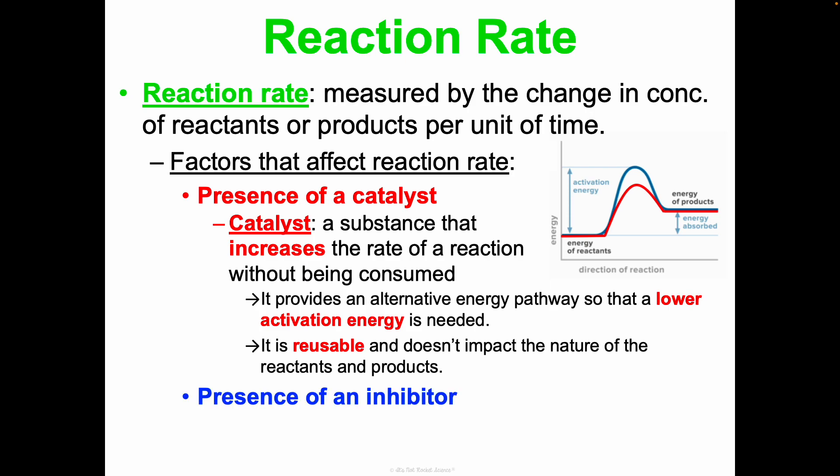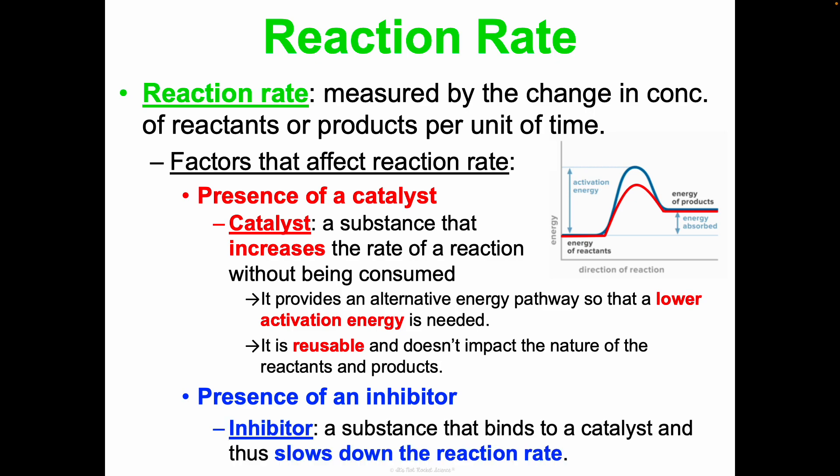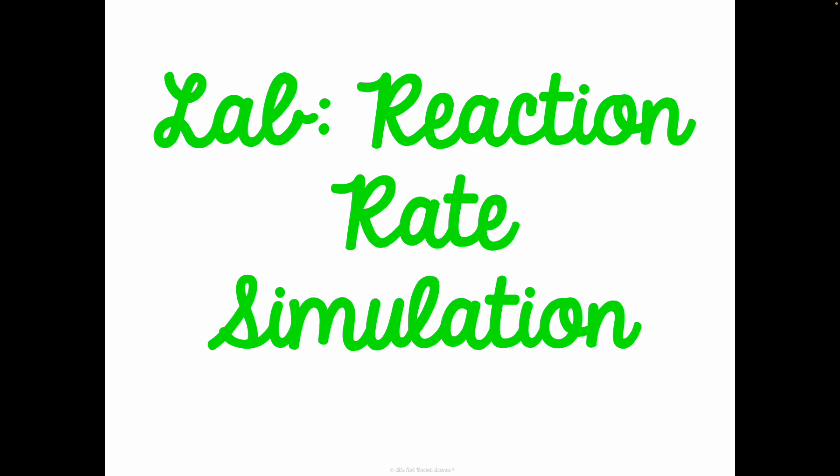The opposite of a catalyst is the presence of an inhibitor. An inhibitor is a substance that binds to a catalyst and blocks it, slowing down the reaction rate. Just like a catalyst, an inhibitor isn't going to completely stop a reaction — it's just going to slow it down. We're going to investigate all of these different factors in a lab simulation about a reaction, which will help you understand how they affect reaction rate. And that's our concept three notes on reaction kinetics — our last video in the chemistry curriculum.